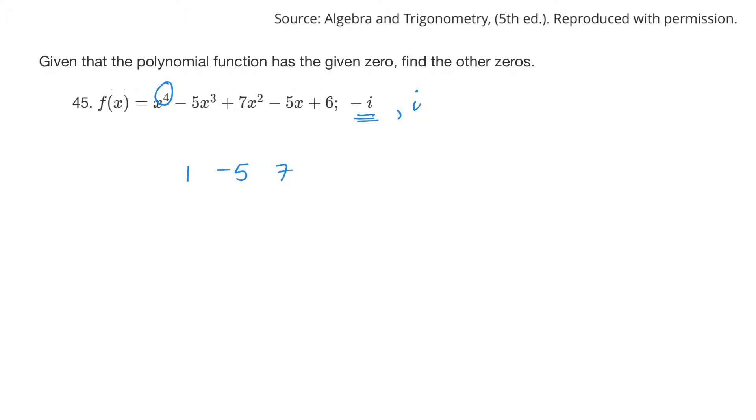So 1 minus 5, 7, minus 5, and 6. I've accounted for 4, 3, 2, 1, and nothing. Good. So let's divide everything by negative i. So 1 times negative i is negative i. Add: negative 5 minus i. And then negative i times this will be positive 5i plus i squared, but that'll turn into a minus 1. Add. So that'll be 7 minus 1, so it'll be 6 plus 5i.